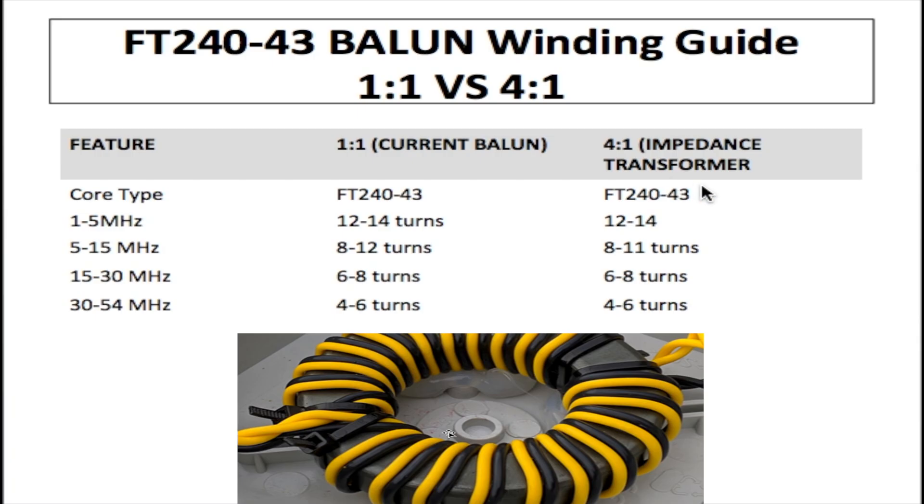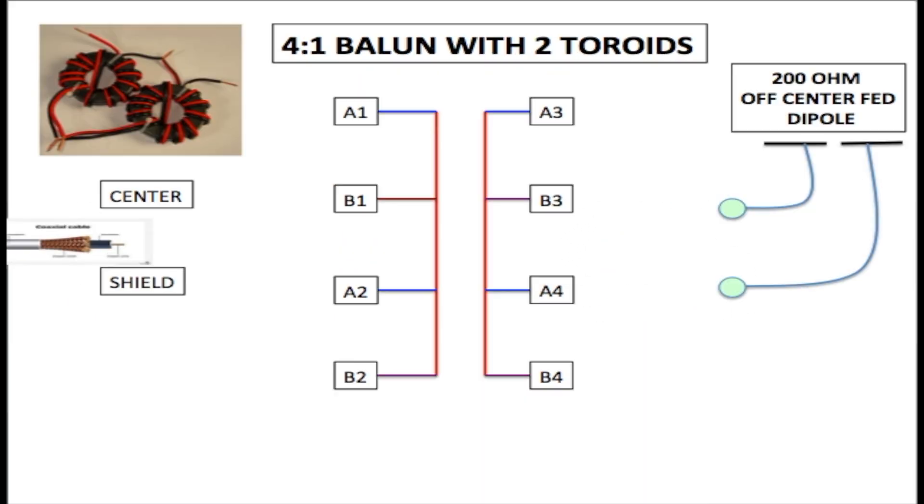So now we are designing the 4:1 balun with 2 toroids. This is our coaxial cable. This is the center conductor. This is the shield. We have A1, B1, A2 and B2. These represent the two toroids. A1 and B1 are wires connected to the first toroid. And A2 and B2 are wires connected to the second toroid.